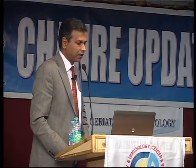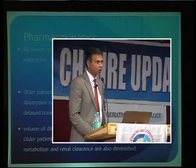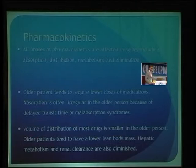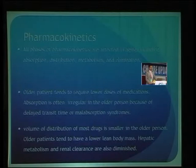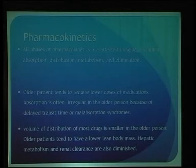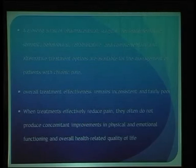Regarding pharmacokinetics: all phases are affected with aging — absorption, distribution, metabolism, and elimination. Older people require lower doses; we use 'start low and go very slow.' Absorption is irregular in older people due to delayed transit time and malabsorption. Volume of distribution for most drugs is smaller; older people have low lean body mass, impaired hepatic metabolism, and reduced renal clearance.